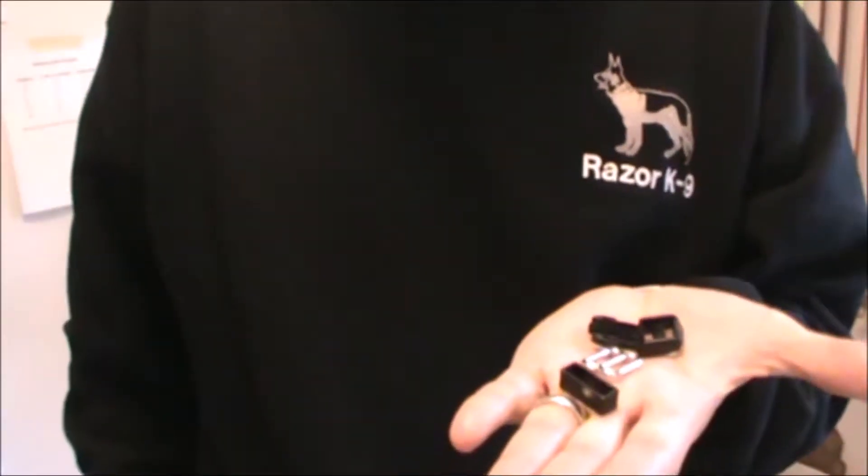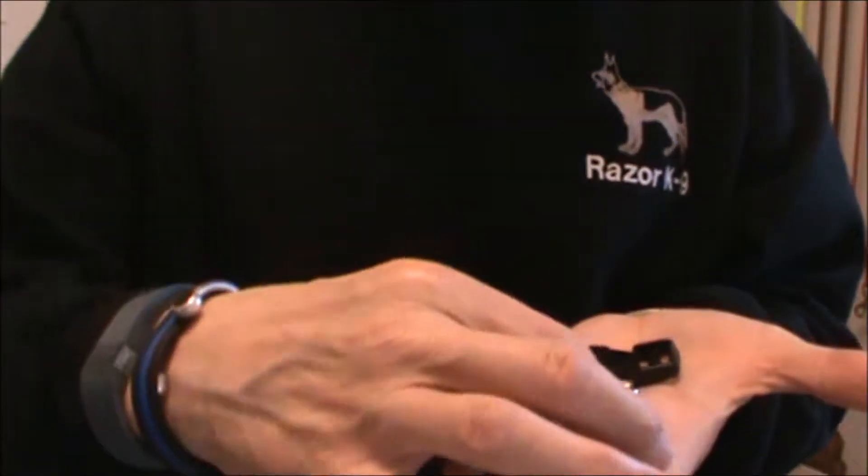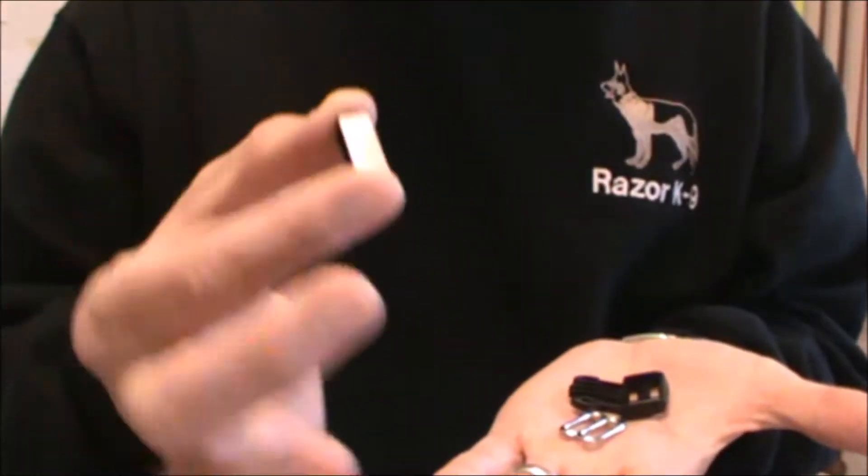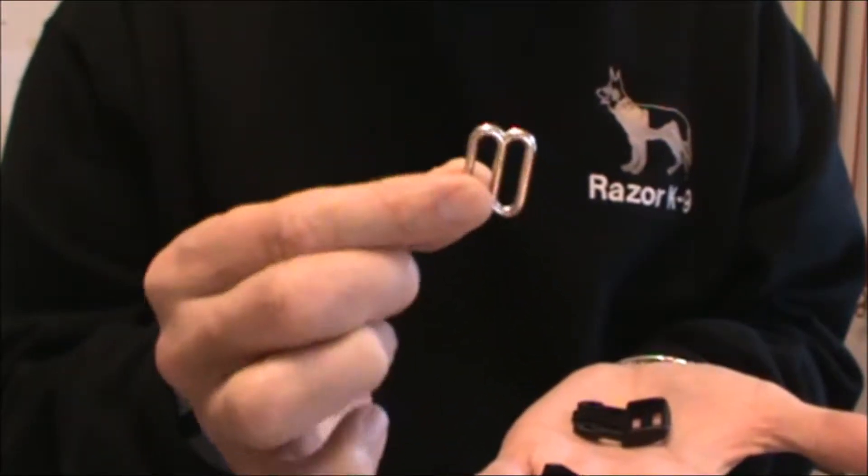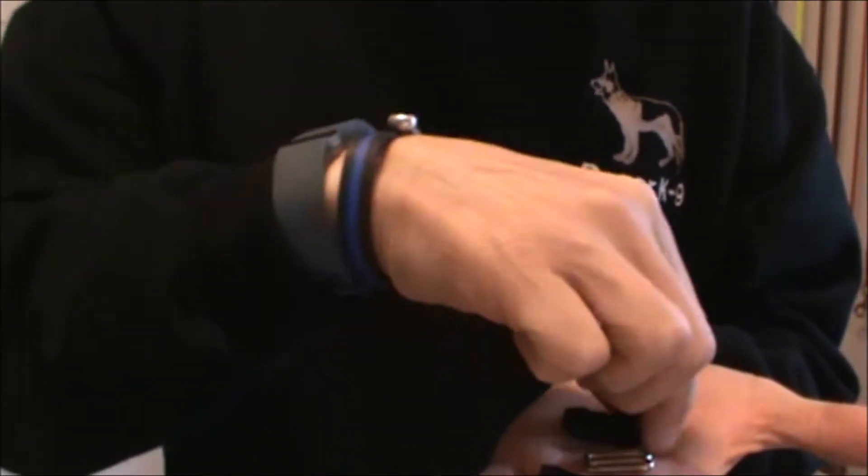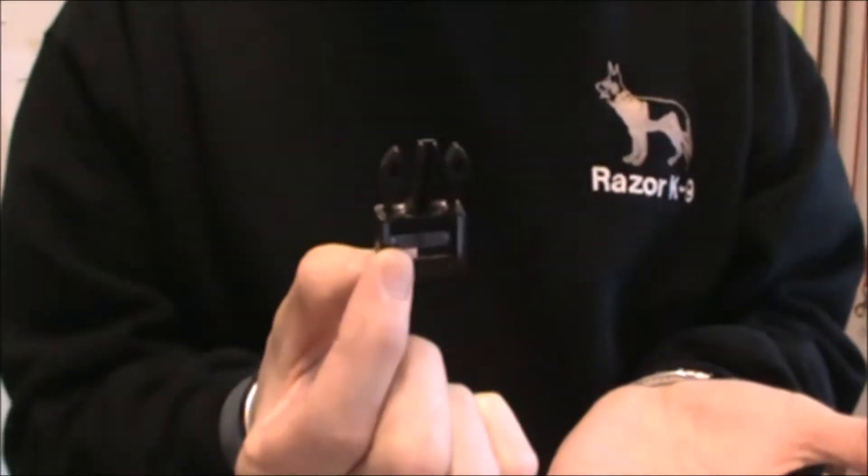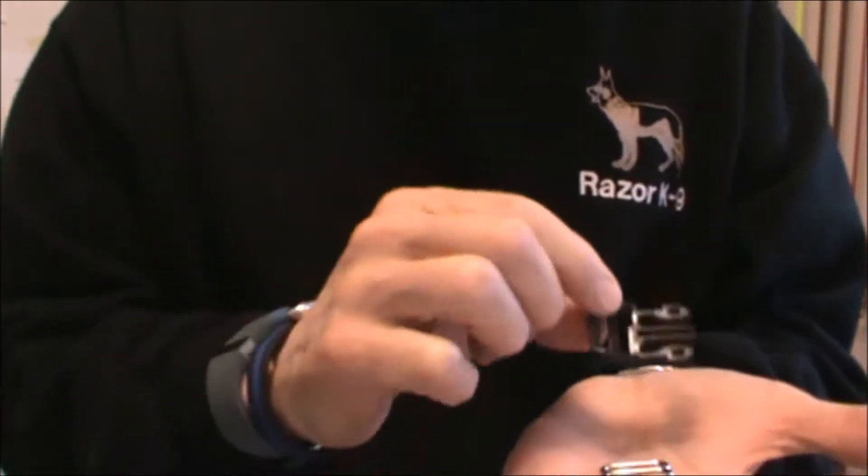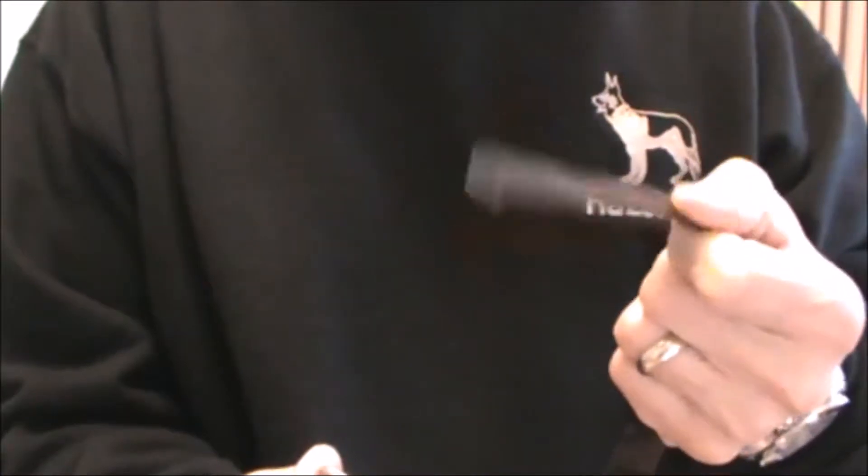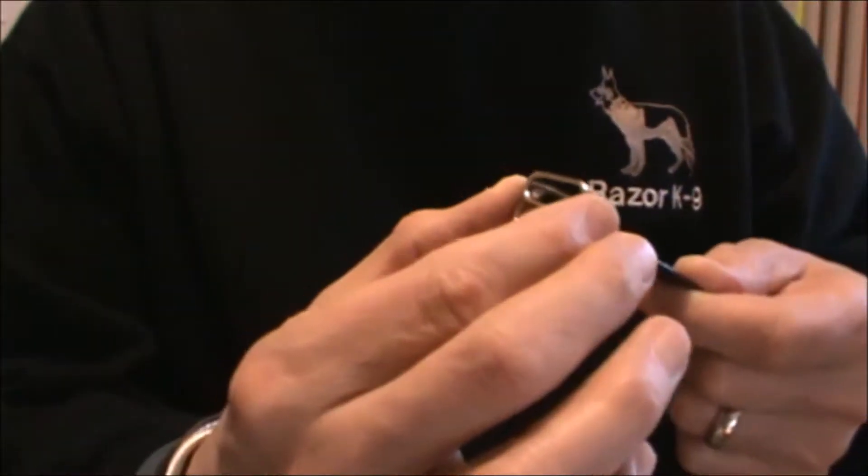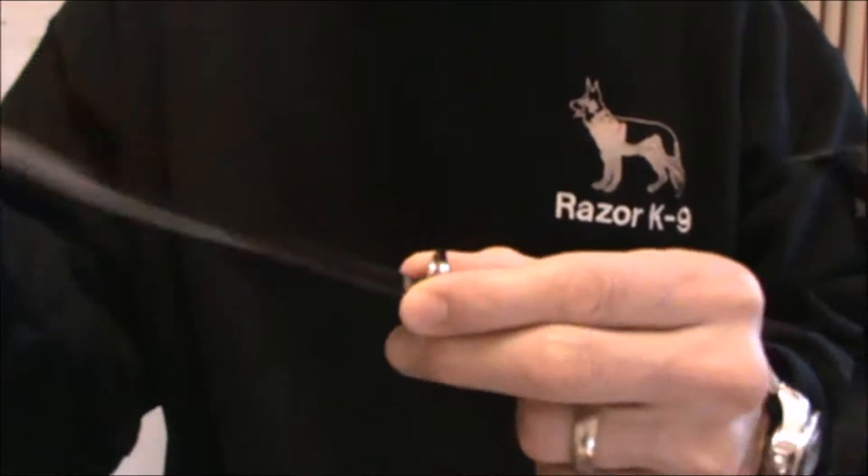Next, you're going to need these three parts that come with my collar: the plastic keeper, the metal slide which keeps the material in place so it won't loosen up, and the male end of the plastic clip. You're going to weave the biothane coated webbing material through the metal slide, like this.